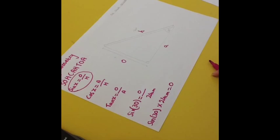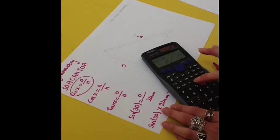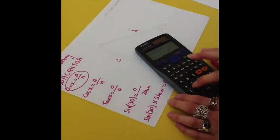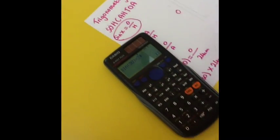Now, you work this out on your calculator. So, you just do sin 30 times 24, and you're given 12. So, the answer is o equals 12 cm.